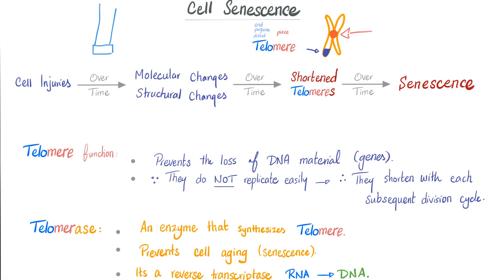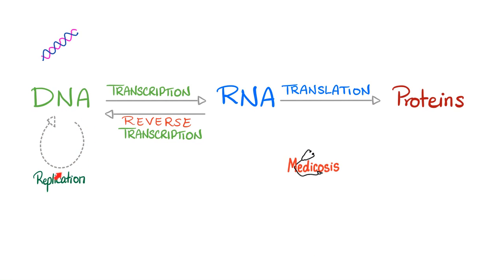What is telomerase? It's an enzyme that synthesizes and preserves the telomeres. It is a reverse transcriptase, meaning it takes you from RNA back into DNA, because telomeres are part of your DNA — part of the chromosome. When you preserve the telomeres, you preserve DNA material and prevent cell aging. Quick review: DNA to DNA is replication; DNA to RNA is transcription; RNA back to DNA is reverse transcription — examples are telomerase and the reverse transcriptase of HIV. RNA to proteins is translation or protein synthesis.